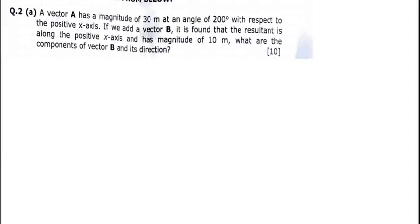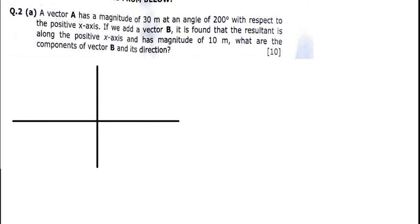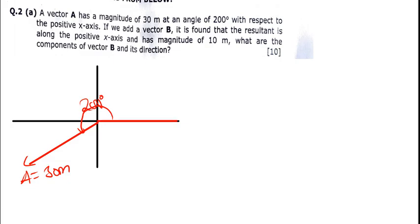Let's come up with a free body diagram. If this is my x-y plane, we have vector A which is 30 meters at an angle of 200 degrees with respect to the positive x-axis. 200 degrees is in the third quadrant, so vector A goes from the origin to that point. We don't know vector B, but we're told that if vector B is added, the resultant vector is along the positive x-axis — that resultant is 10 meters.